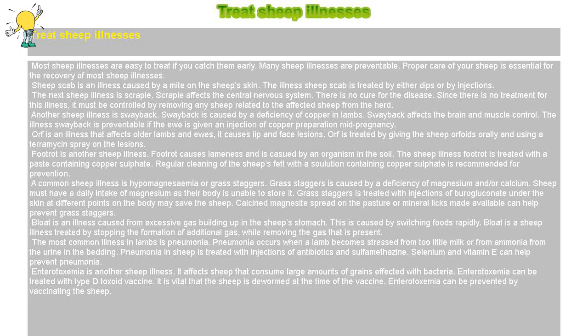Grass staggers is treated with injections of borogluconate under the skin at different points on the body, which may save the sheep. Calcined magnesite spread on the pasture or mineral licks made available can help prevent grass staggers.